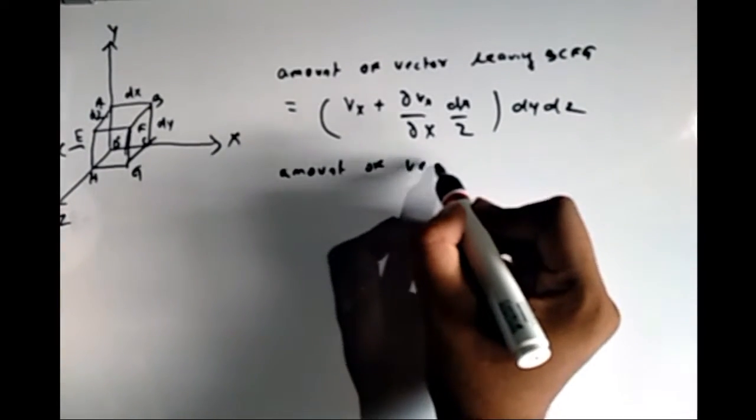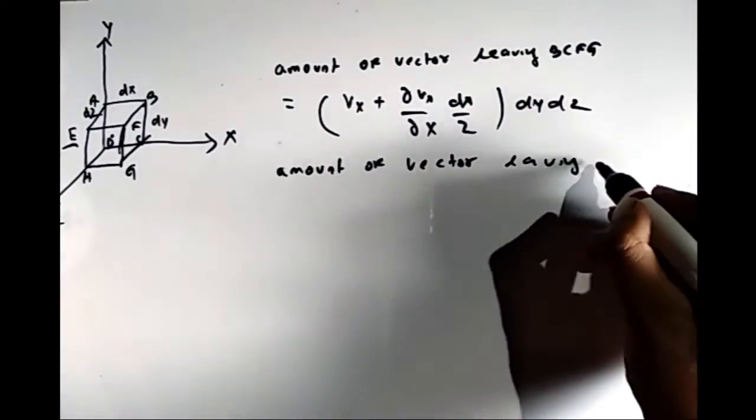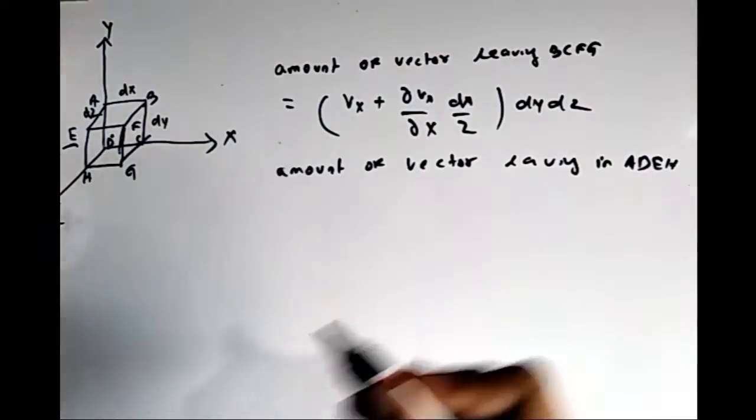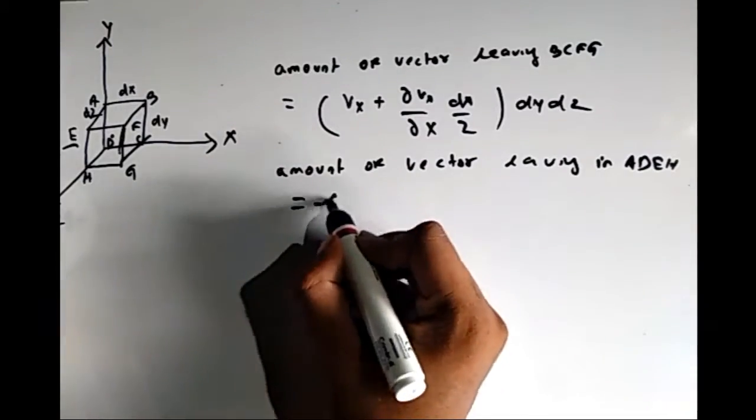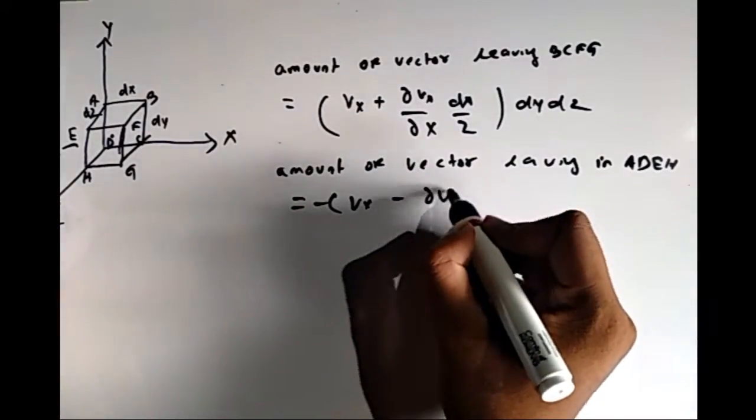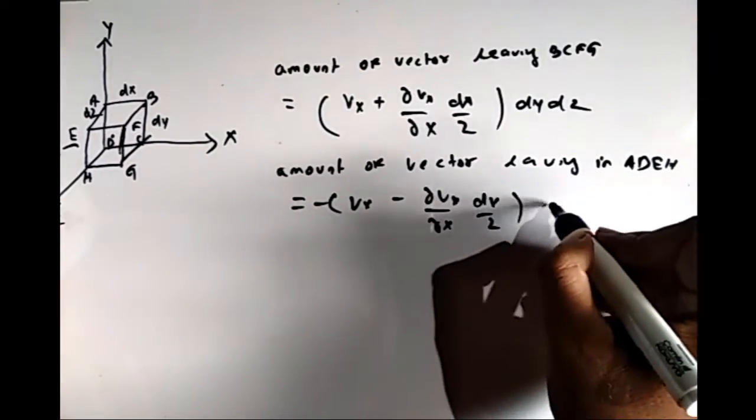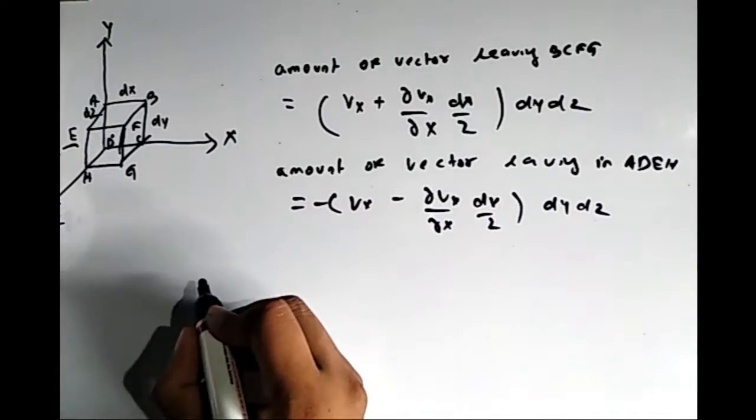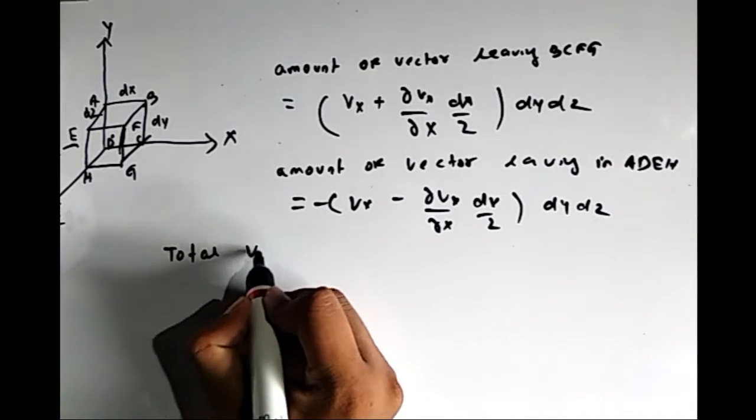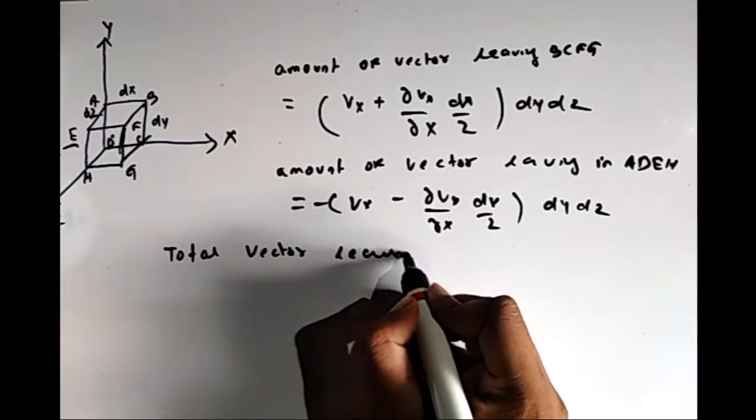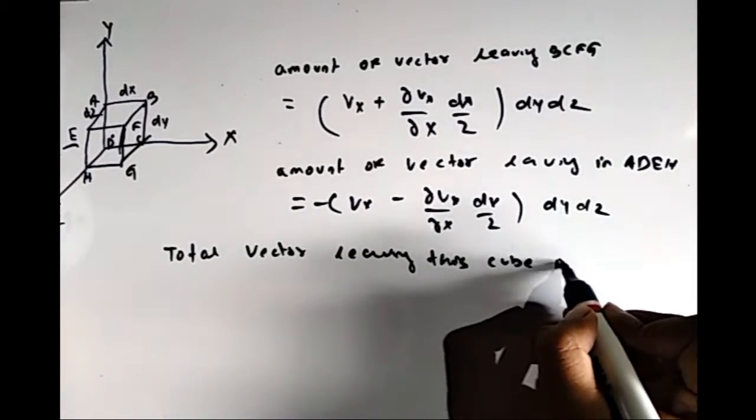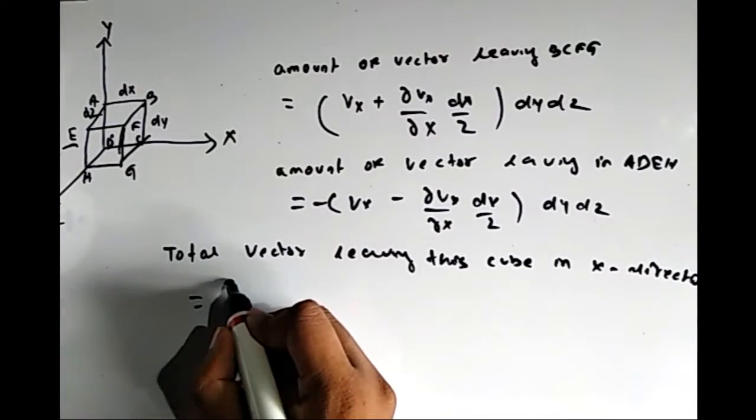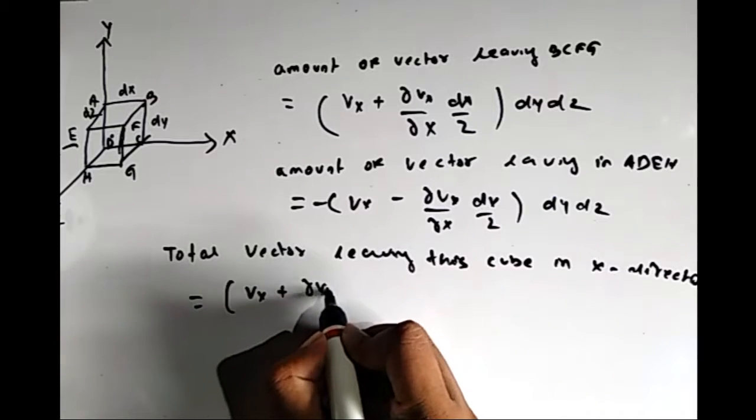For the opposite surface, the amount entering is Vx minus half del Vx by del x times dx dy dz, because it is moving in the opposite direction, where dx by 2 is the length.